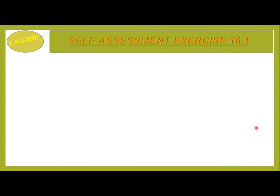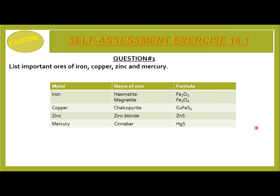Self-Assessment Exercise 16.1, Question No. 1: List important ores of iron, copper, zinc and mercury. Metal names, ore names, and formulas are represented in a table. Metal No. 1 is iron: hematite (Fe2O3) and magnetite (Fe3O4). Next metal is copper: chalcopyrite (CuFeS2). Zinc: zinc blende (ZnS). Mercury: cinnabar (HgS).